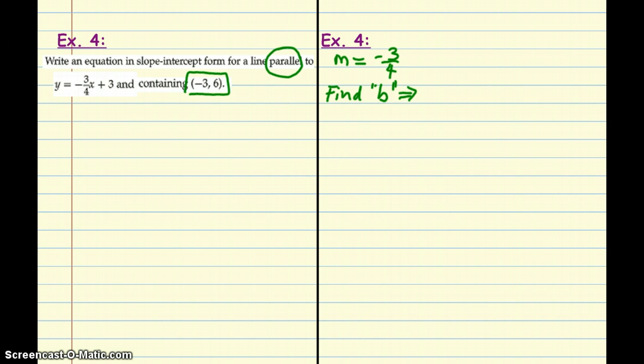So, we're going to use y equals mx plus b again, the slope-intercept form. Put in what we know. So, we've got 6 equals negative 3 fourths times negative 3 plus b. Do the multiplication first. So, I get 6 equals 9 fourths plus b. And, again, just like before, I'm going to change 6 into something over 4. And, I know that 6 times 4 is 24. So, this becomes 24 fourths.